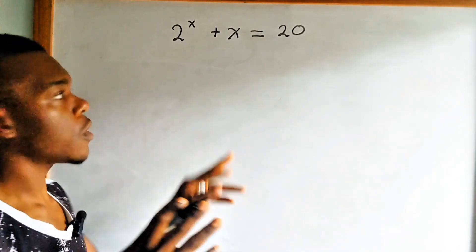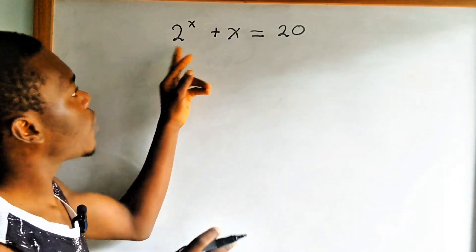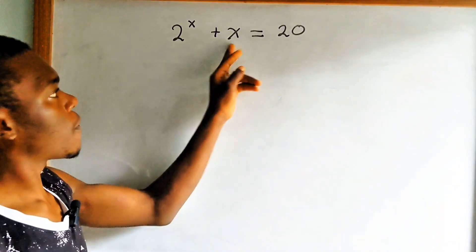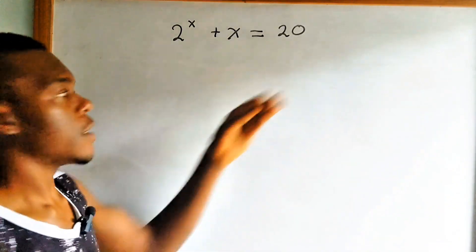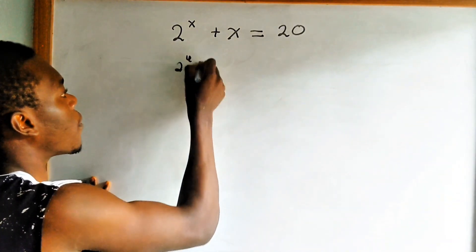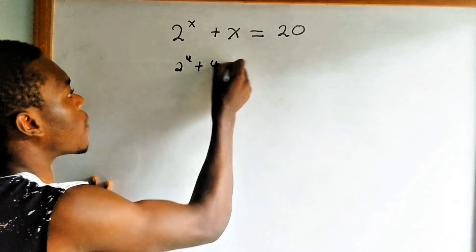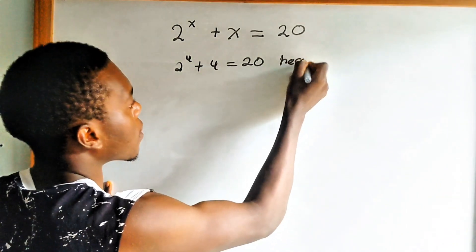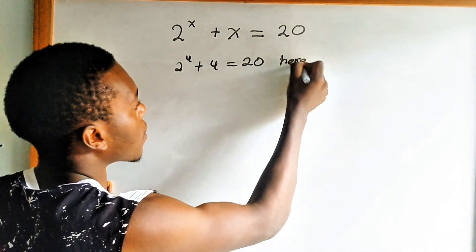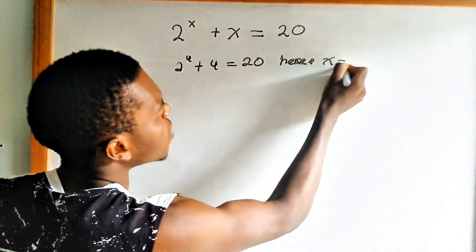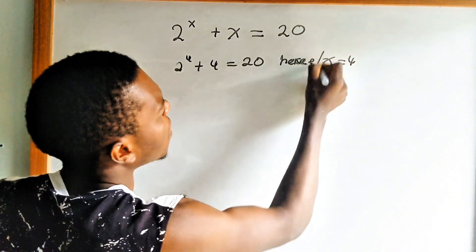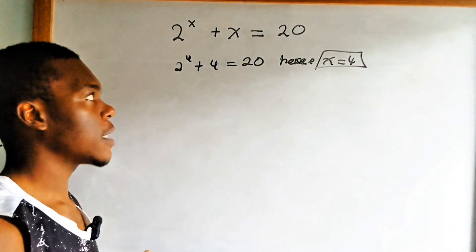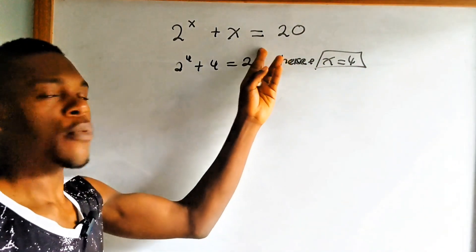By substitution, if I put the number 4, because 2 to the power 4 is 16, plus 4 will give you 20. Therefore 2 to the power 4 plus 4 is equals to 20, hence x is equals to 4. That is automatically the answer.